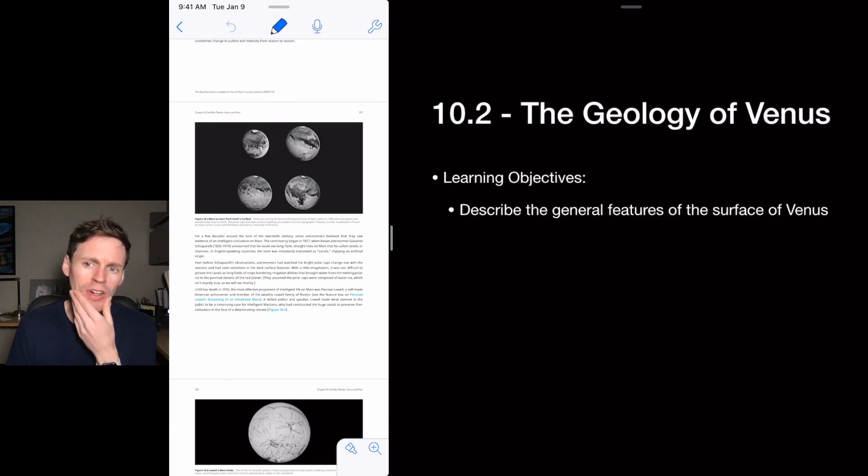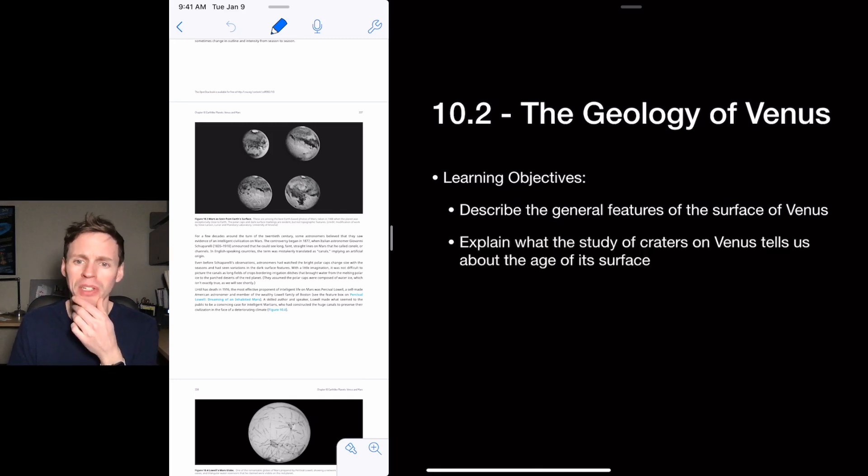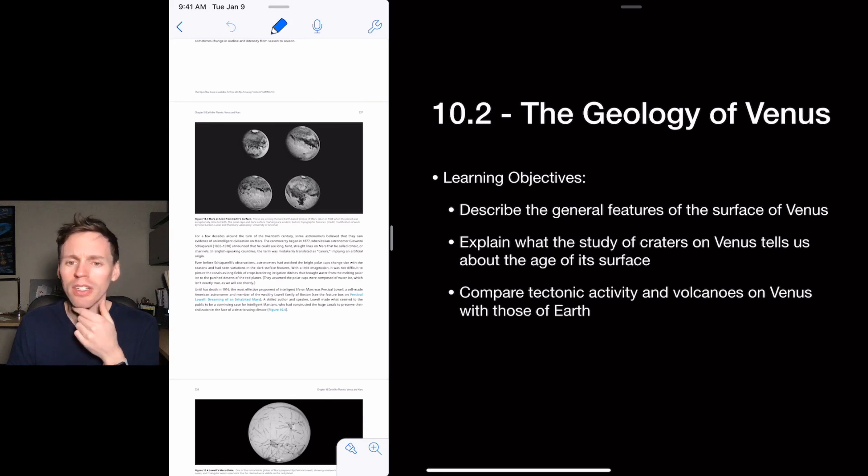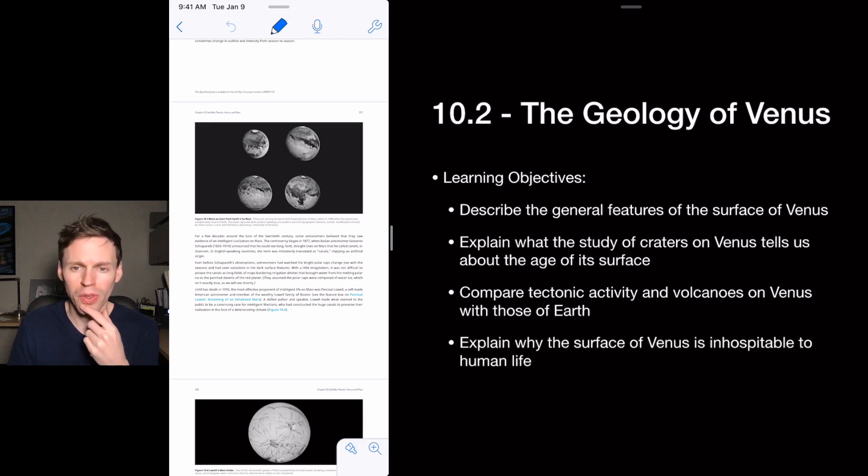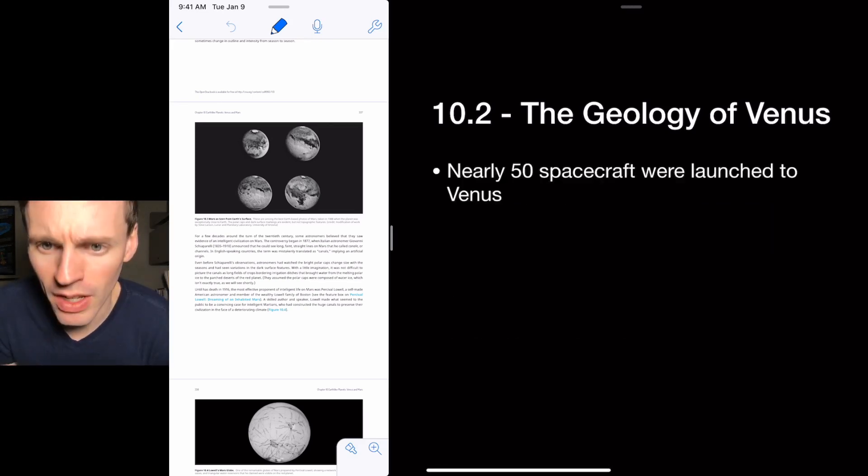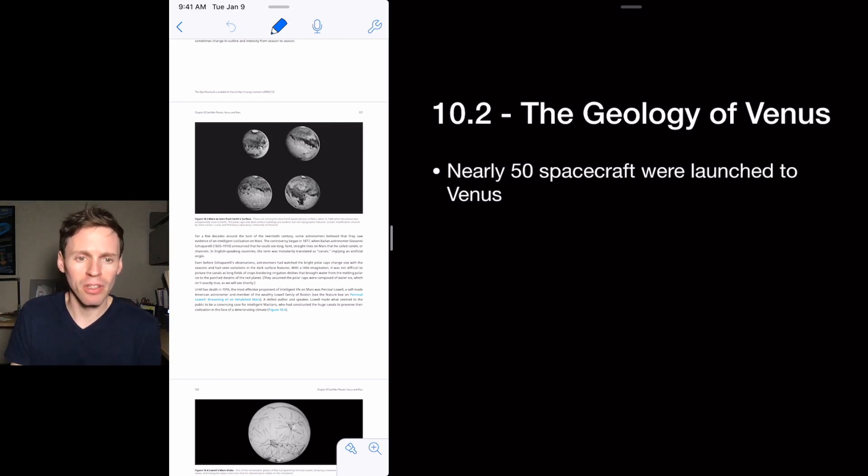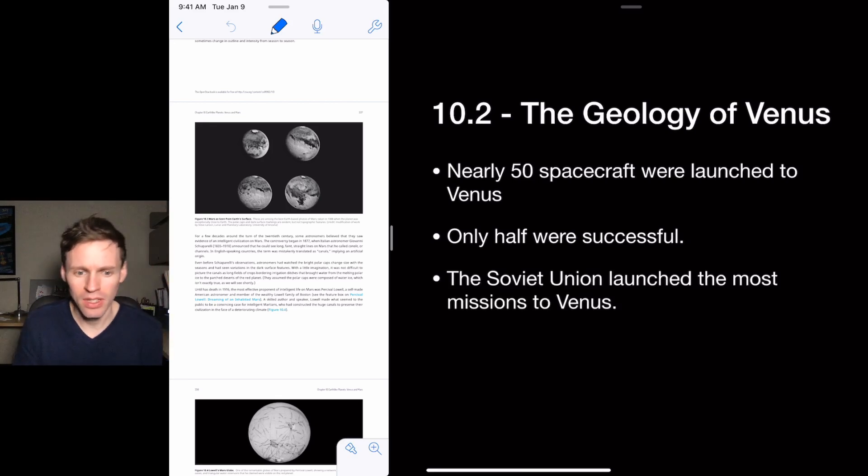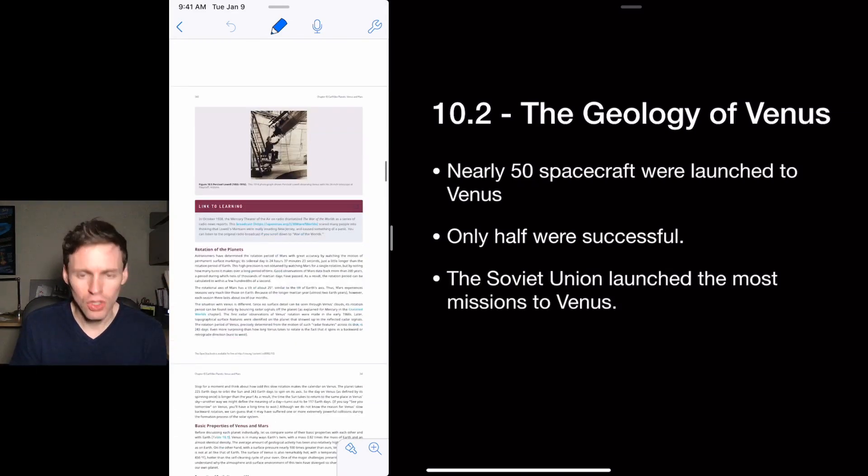Okay, so Venus, we want to describe the features on the surface of Venus. We want to explain craters and tells us how the age of the surface from those craters, compare tectonic activity and volcanoes on Venus, compare those to Earth, and then explain why the surface of Venus is inhospitable to human life. So nearly 50 spacecraft have been launched intended to go to Venus. Only half were successful.